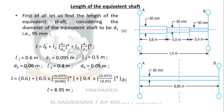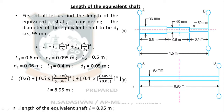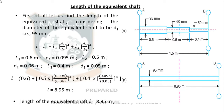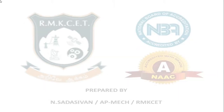If I am replacing this stepped shaft with a shaft of a single homogeneous diameter of 95 mm, instead of 1.5 meters I need 8.95 meters to get the same angle of twist for a given torque. That is the meaning of the equivalent shaft length.